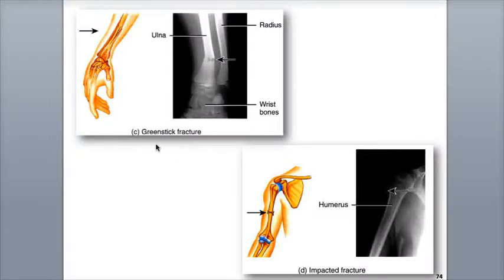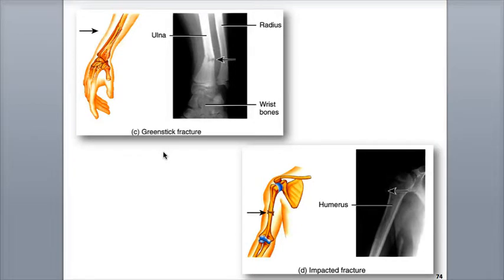A greenstick fracture is a partial incomplete fracture in children that involves a break in one side of the bone and a bend in the other side. This fracture is named after the way a young twig breaks on a plant. The bones of children are still developing and are not fully ossified, so the extra protein their bones contain make them a bit more bendable compared to adult bone.